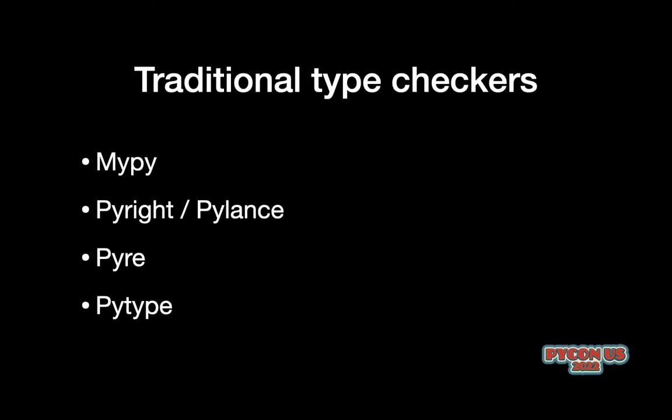It's probably worth saying as some background that type annotations were originally designed only for use by type checkers to use statically. While the syntax for declaring type annotations has been a subset of the expression syntax in Python, and therefore you can get a hold of these objects at runtime, originally runtime usages were not necessarily focused on. But because you can actually get expressions with types, there are many libraries that have found alternate uses for actually using these type annotation variables.